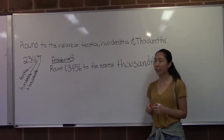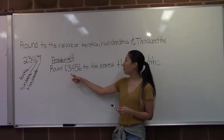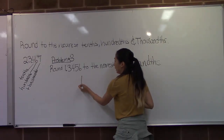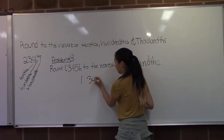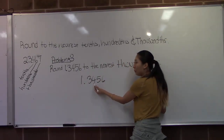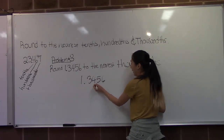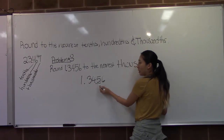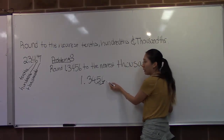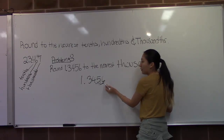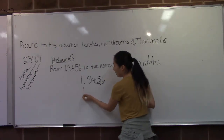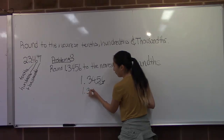We'll be doing problem number 3. This problem will be rounding 1.3456 to the nearest thousandths. In order to do this problem, we'll need to locate the thousandths place. So 3 will be the tenths place, 4 will be the hundredths place, and 5 will be the thousandths place. We'll go one decimal place to the right. If this number is 5 or larger, we'll be rounding up; if it's less than 5, this number will stay the same. This particular problem will be rounding up since 6 is greater than 5, so the answer will be 1.346.